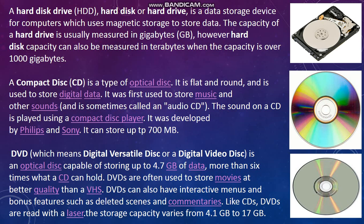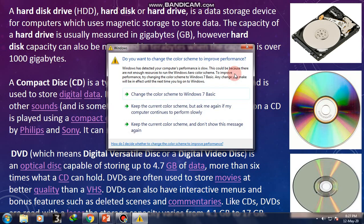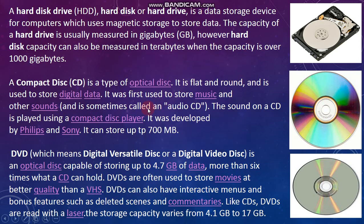Next is compact disk. CD stands for compact disk. A compact disk is a type of optical disk — it is flat and round and is used to store digital data. It was first used to store music and other sound, and is sometimes called an audio CD. The audio on a CD is played using a compact disk player. It was developed by Philips and Sony, and it can store up to 700 MB.